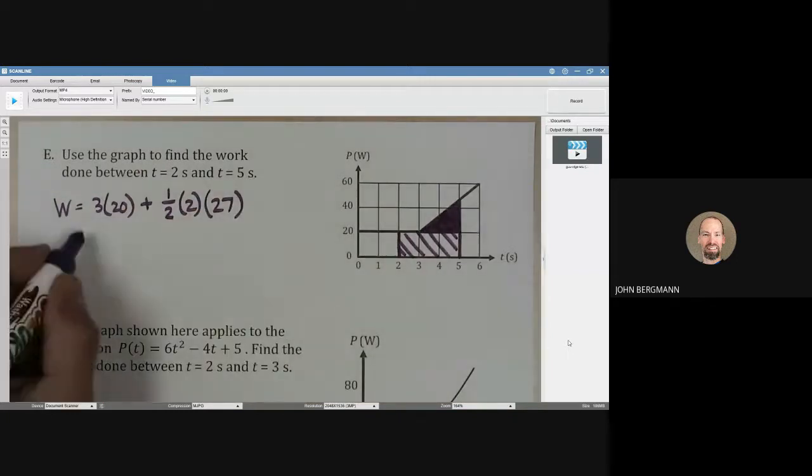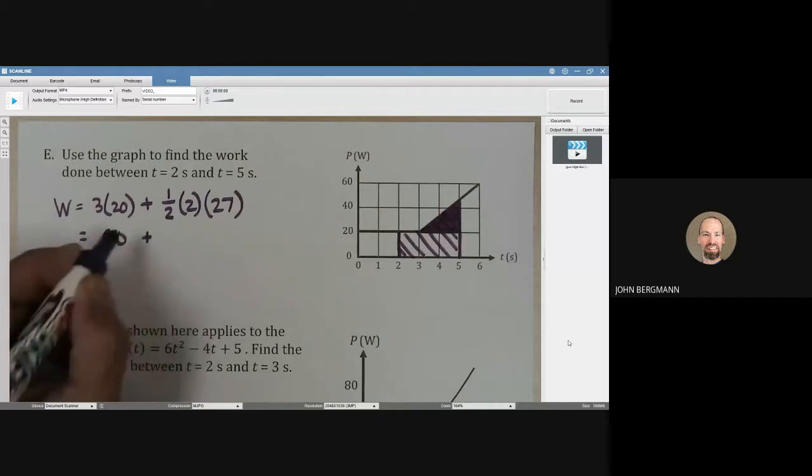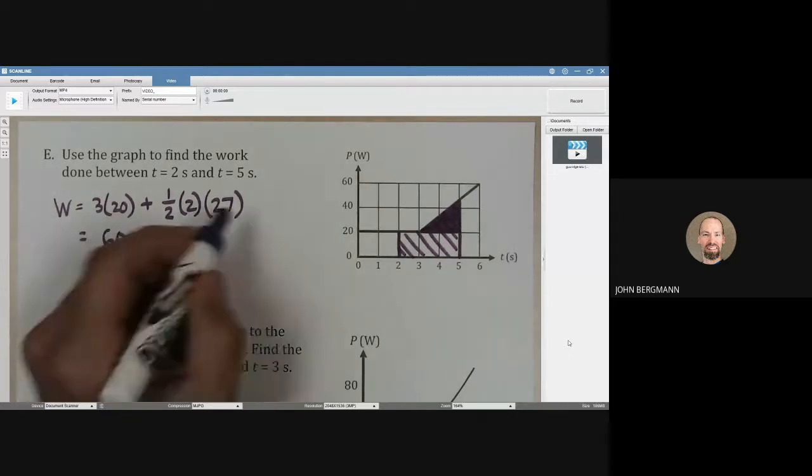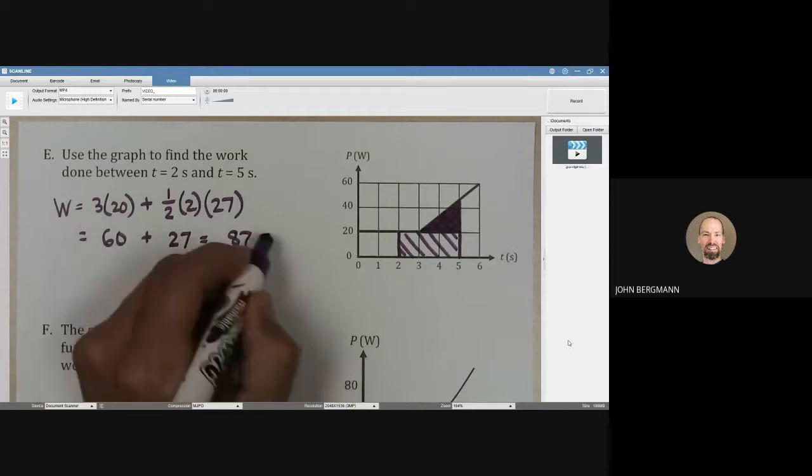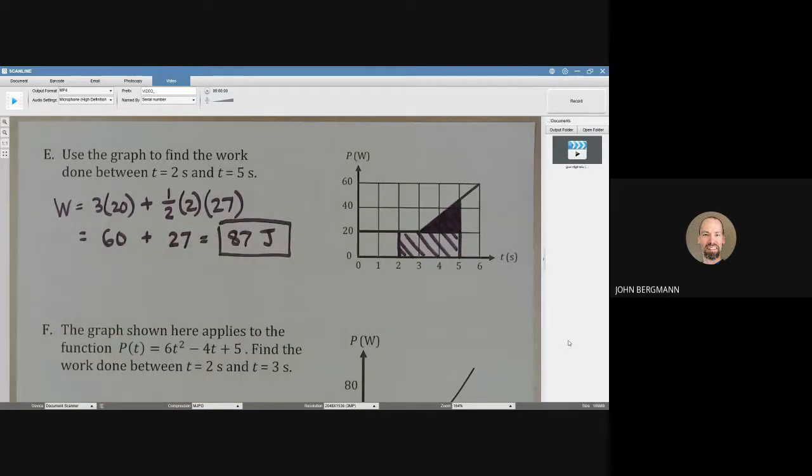So what does this give us? 60 plus 27, and that's going to be about 87 joules. That's how we do that.